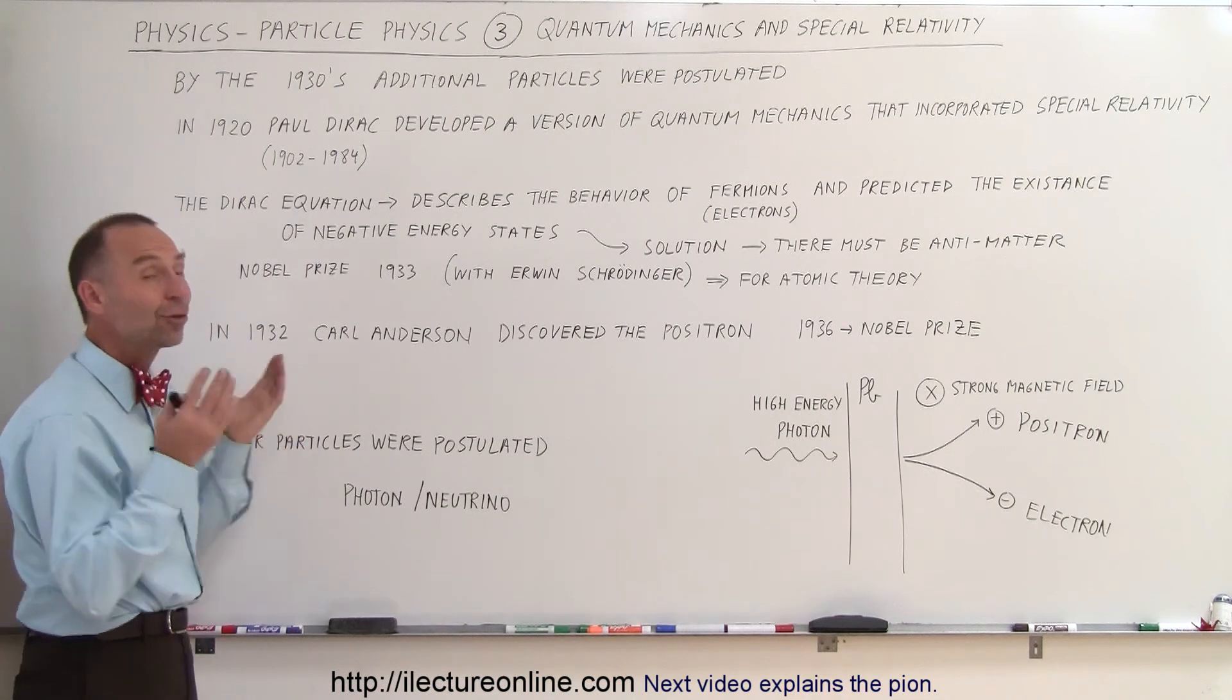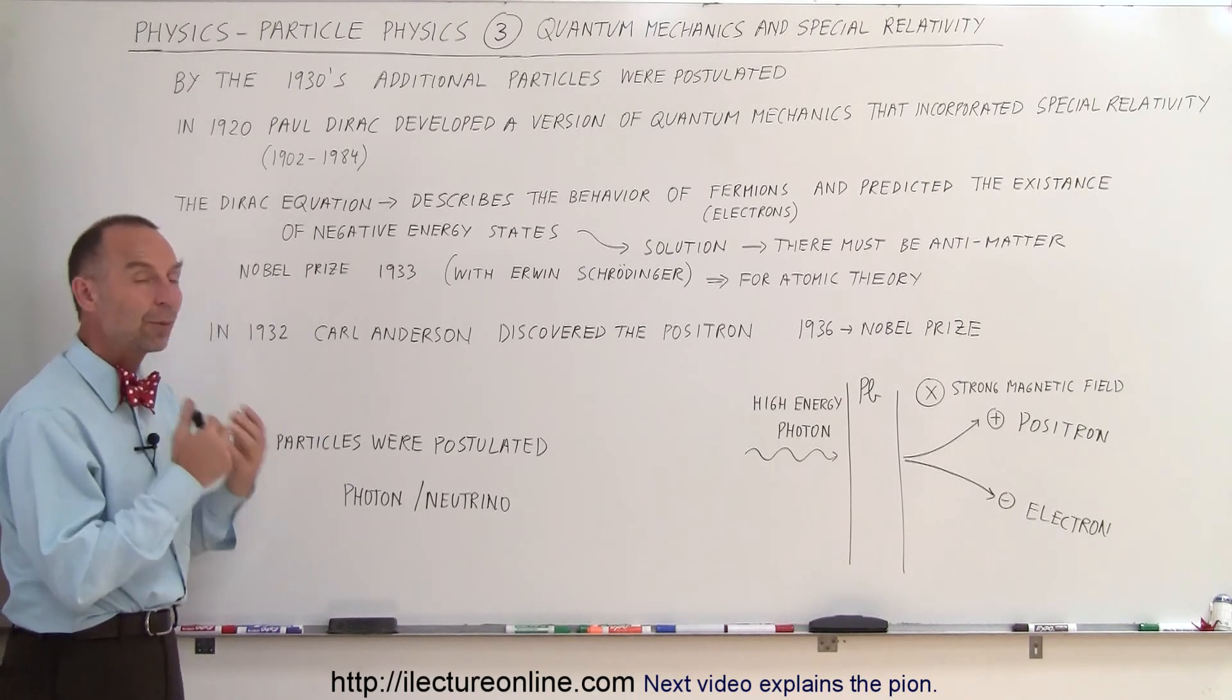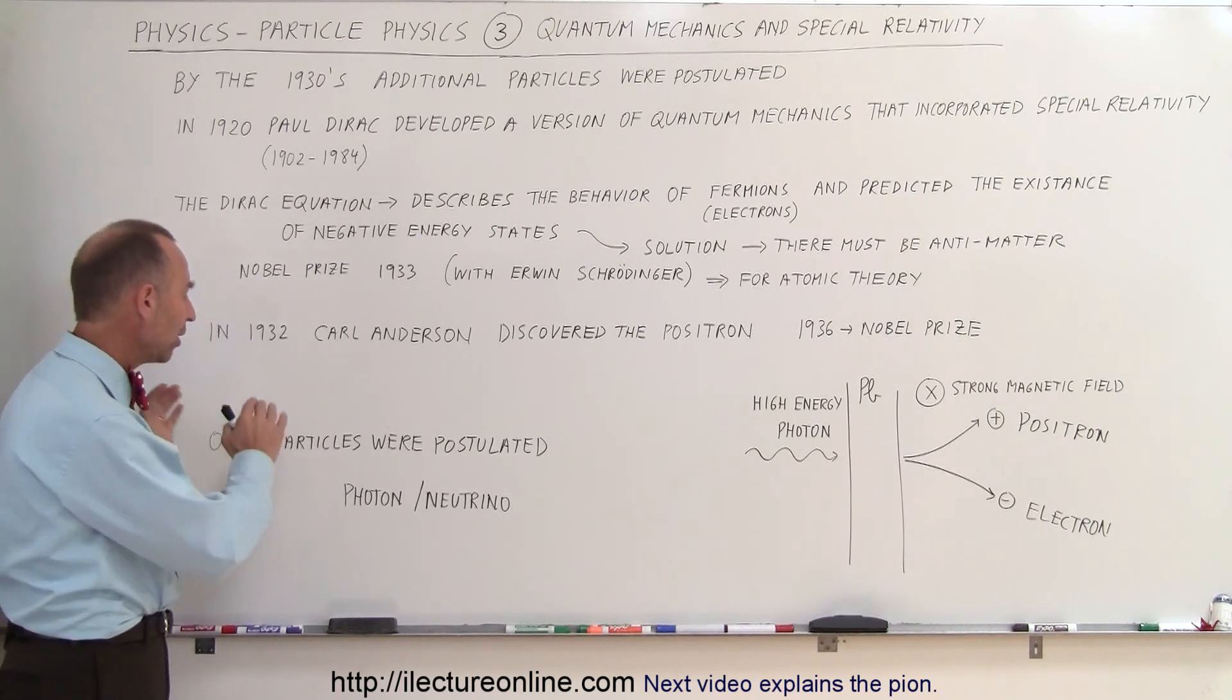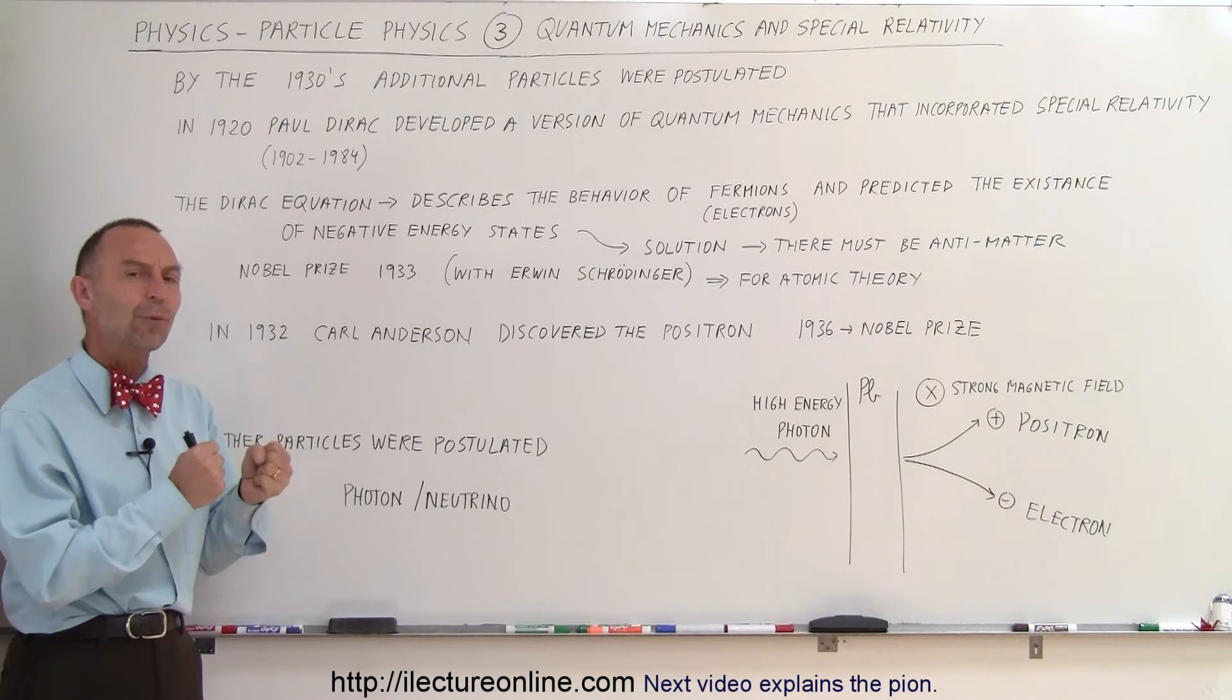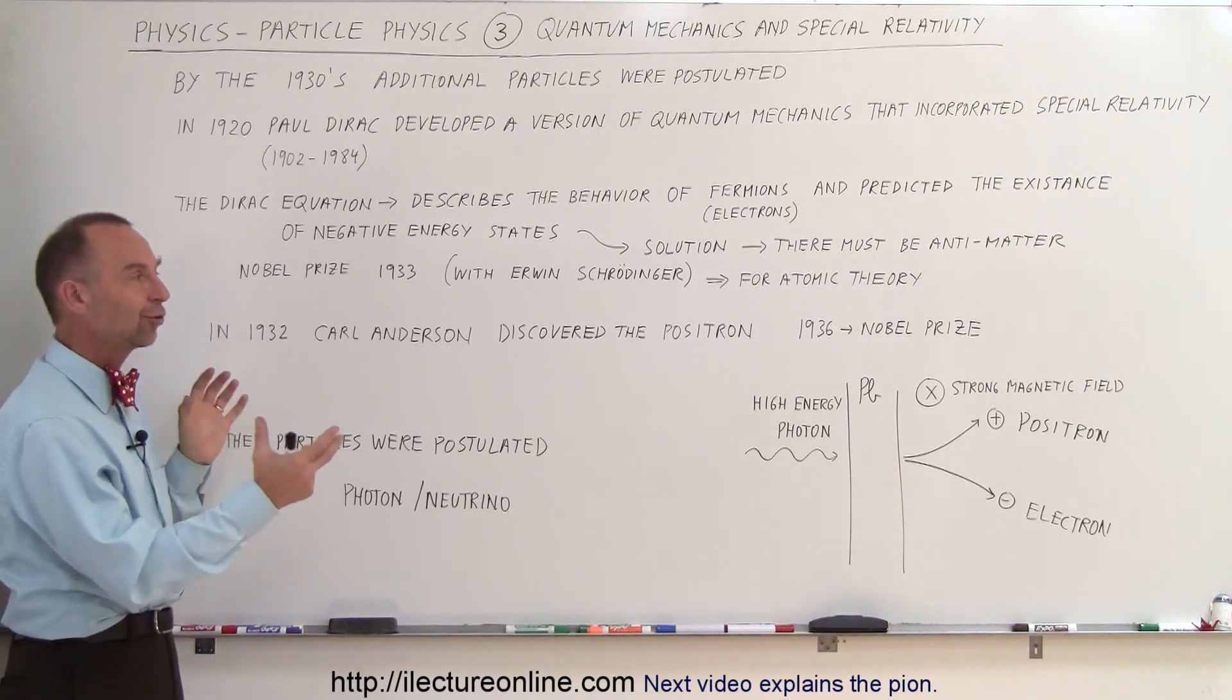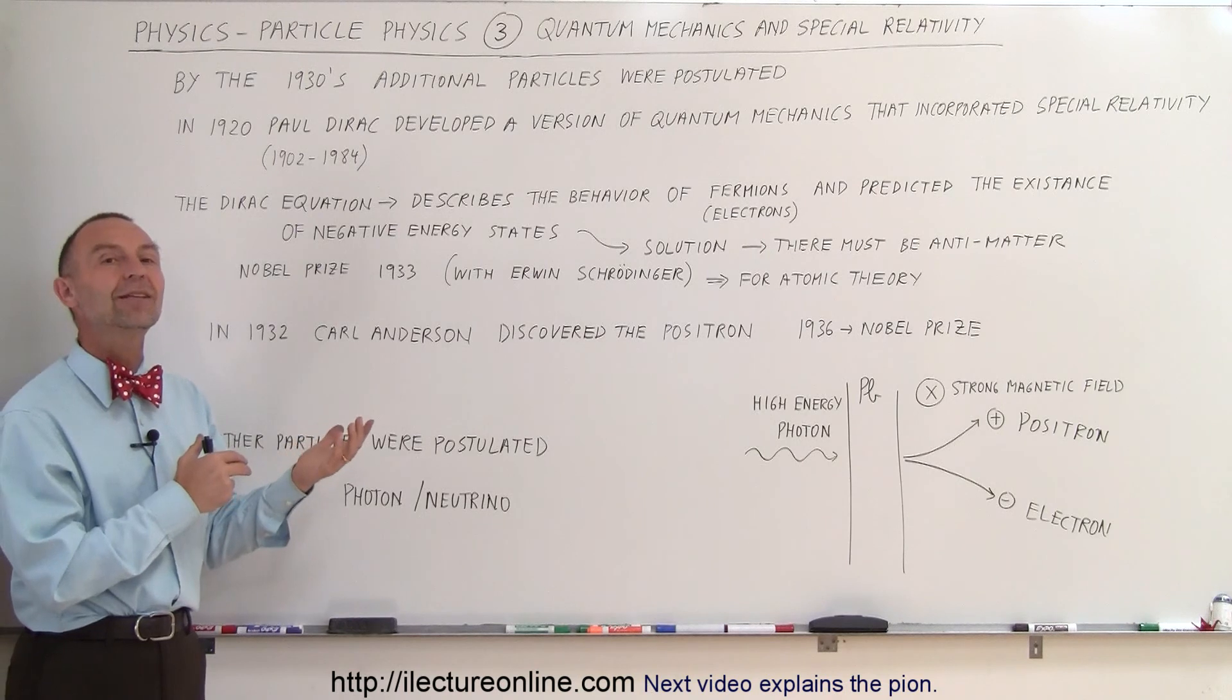So the 1930s was a big decade for the discovery and understanding of particle physics. All of a sudden we realized there were more particles than just the proton, the electron, and the neutron. Additional particles were beginning to be postulated, and so now all we had to do was go out and try to find them, try to discover them, trying to find some way, coming up with an experiment that could show us that these particles existed.